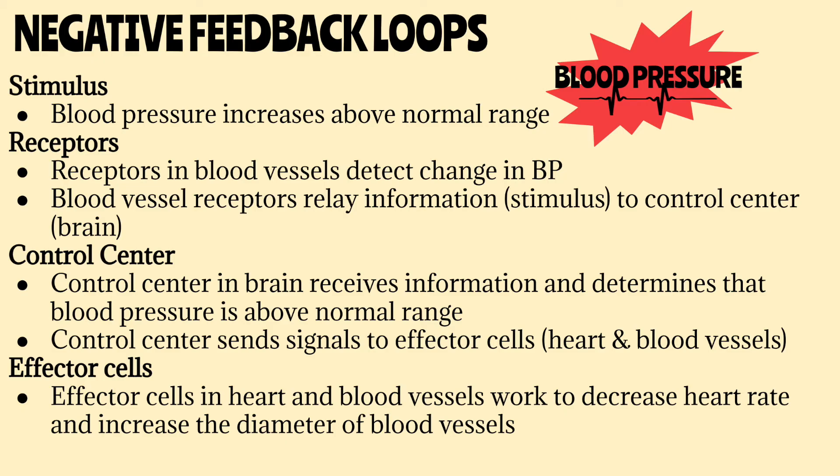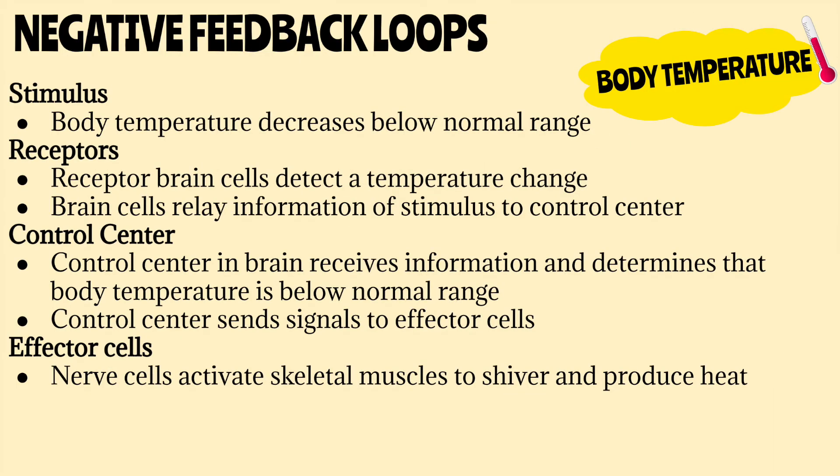So now some examples. Let's start with blood pressure. Let's say your blood pressure becomes really high. This piece of information is a stimulus that is detected by receptors in the blood vessels. The receptors will send this information over to the brain, which would be the control center. After determining that your blood pressure is out of normal range, the control center will then send a message to the effector cells. The effectors in this scenario would be the heart and blood vessels. The effectors will work to decrease heart rate and increase the diameter of blood vessels, in turn causing blood pressure to fall back within its normal range. Now let's say that your blood pressure was low instead of high — the effector would do the opposite: increase the heart rate and decrease the blood vessel size and diameter.